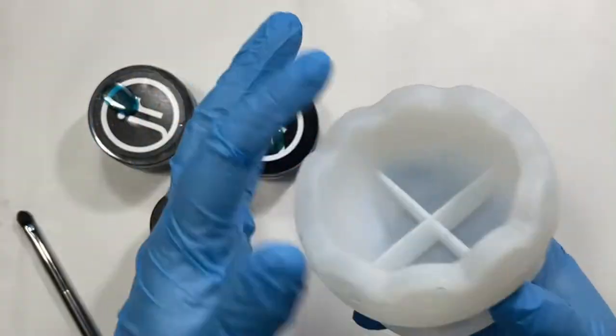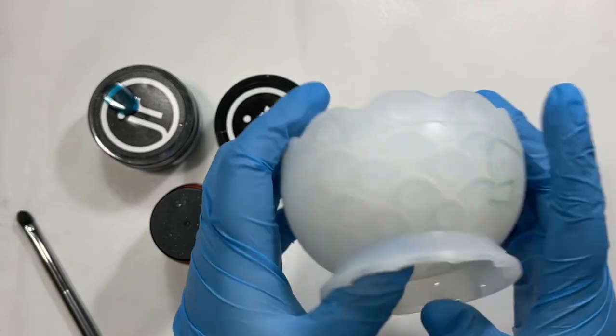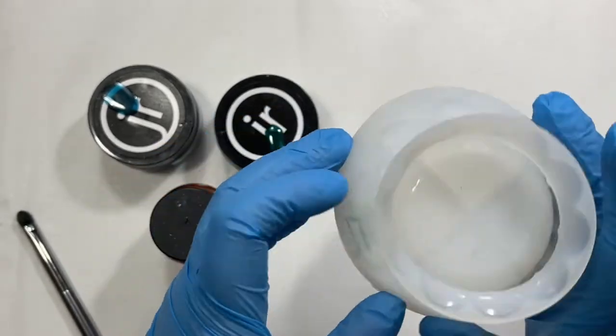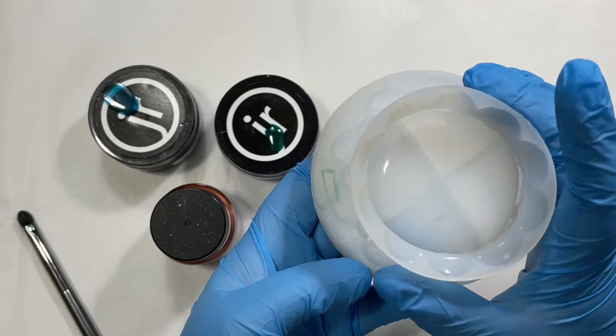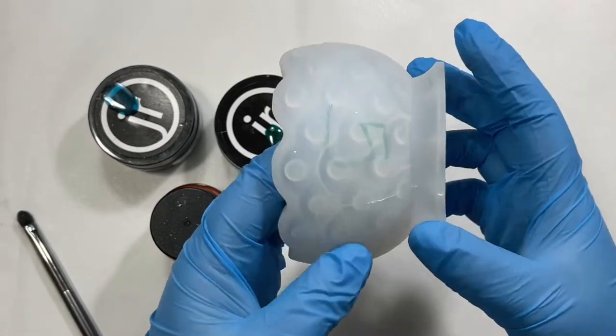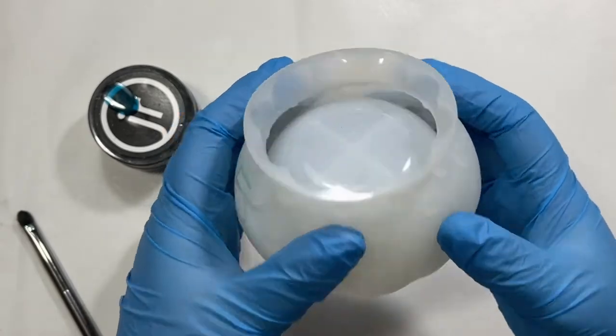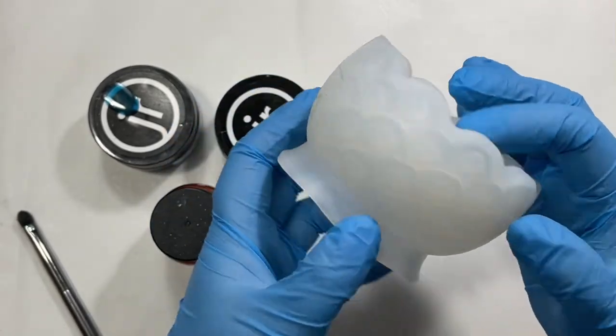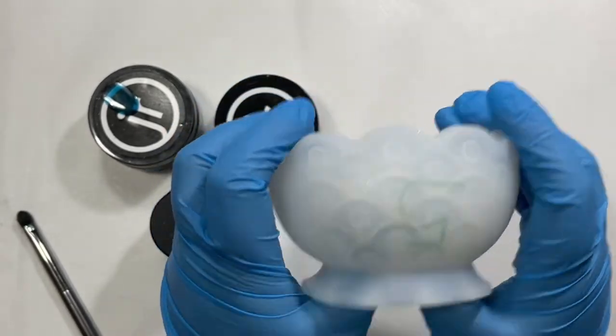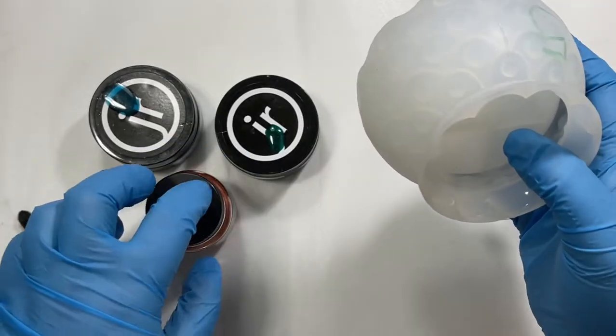I poured some water in to measure how much resin this takes - it's five ounces for this little bowl, which surprised me. I thought it would be less. First thing I'm going to do is paint with the mica.